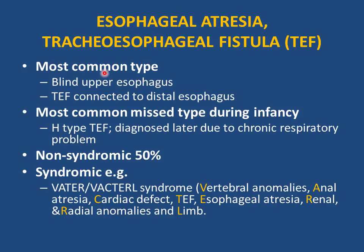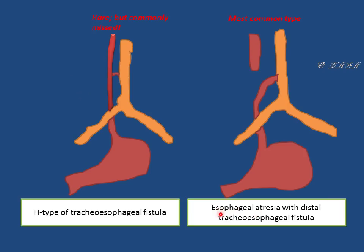The most common type of esophageal atresia is a combination of a blind upper esophagus and a tracheoesophageal fistula connected to the distal esophagus. The most commonly missed type — which is actually rare — is H-type, a small connection between the esophagus and trachea. It is diagnosed later in life due to chronic respiratory problems such as recurrent pneumonia or wheezing. Non-syndromic is 50%; syndromic includes VACTERL — vertebral anomalies, anal atresia, cardiac defects, TEF, esophageal atresia, renal and radial/limb anomalies.